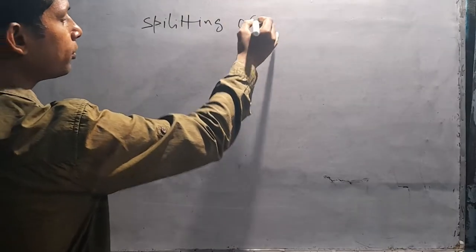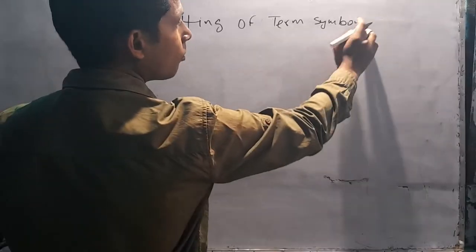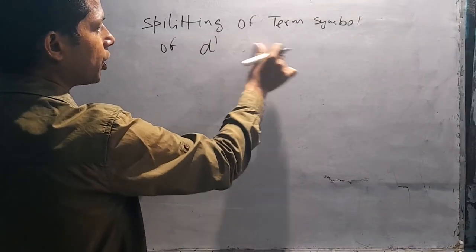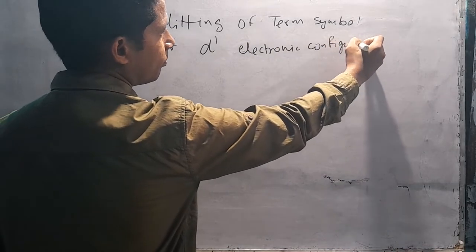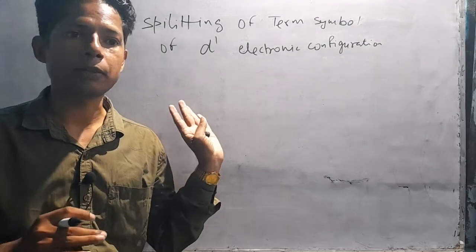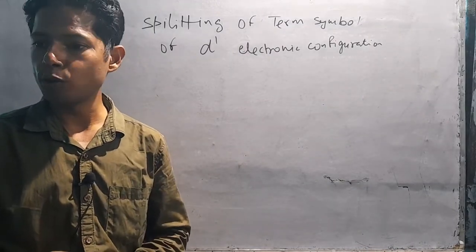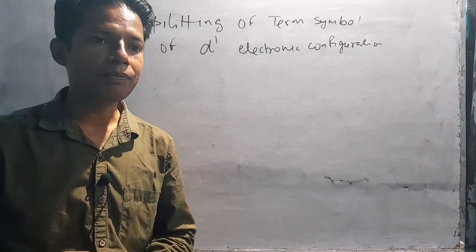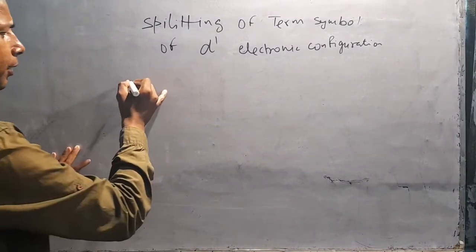इस lecture में हम D1 electronic configuration के term symbol की splitting देखेंगे। सबसे पहले हमें term symbol find out करना है। हमारे पास सिर्फ D1 दे रखा है, तो पहले हम LS coupling के rules के according term symbol find out करेंगे, फिर उस term symbol को spread करके और एक energy level diagram भी बनाकर दिखाएंगे।